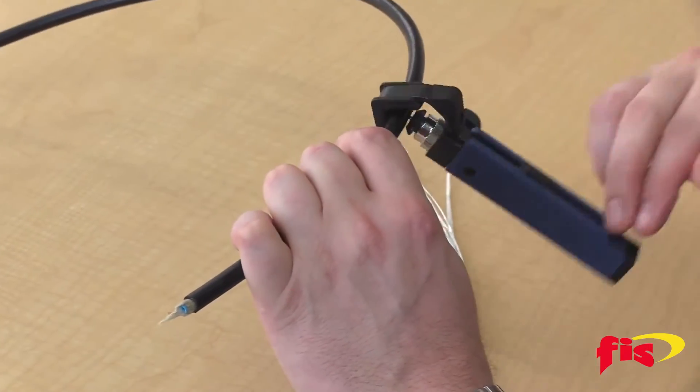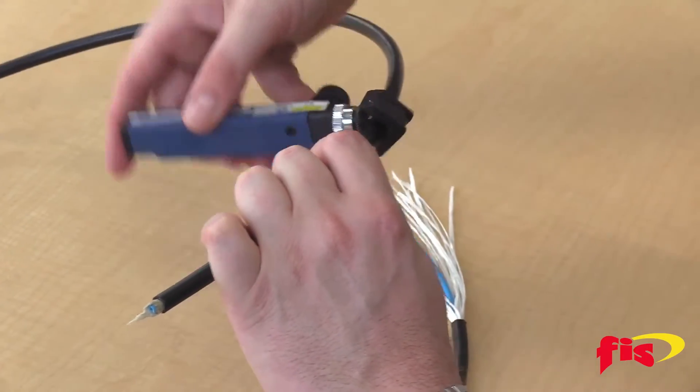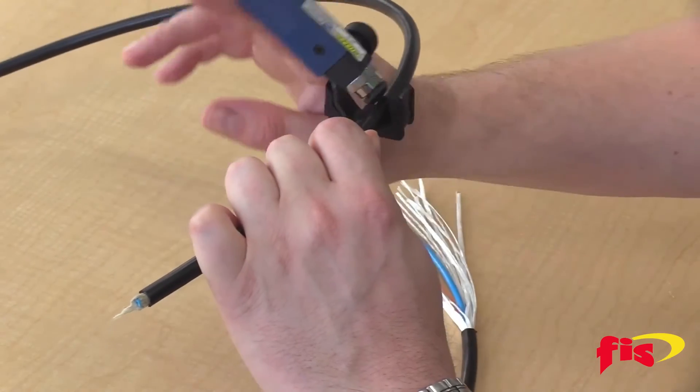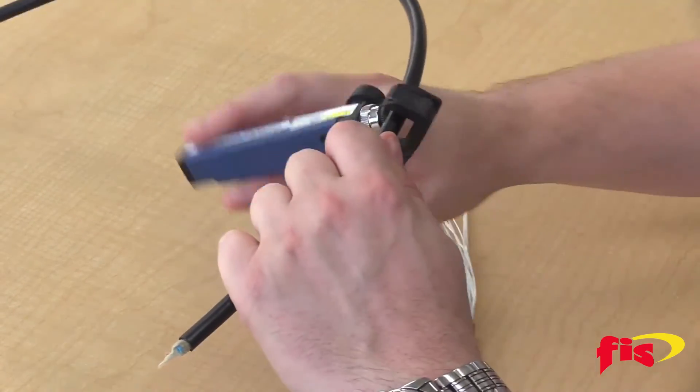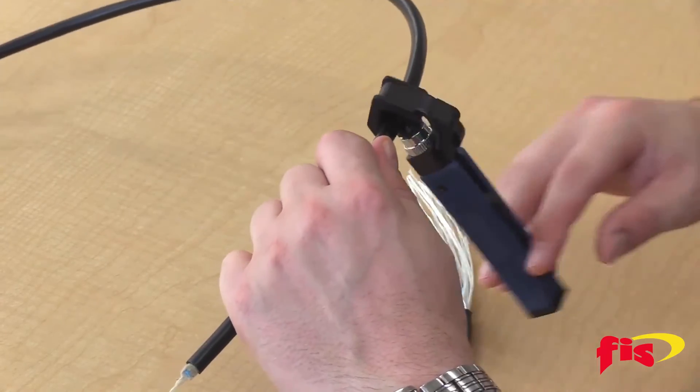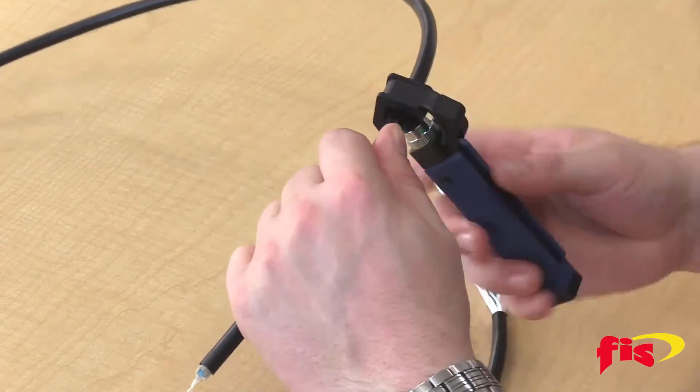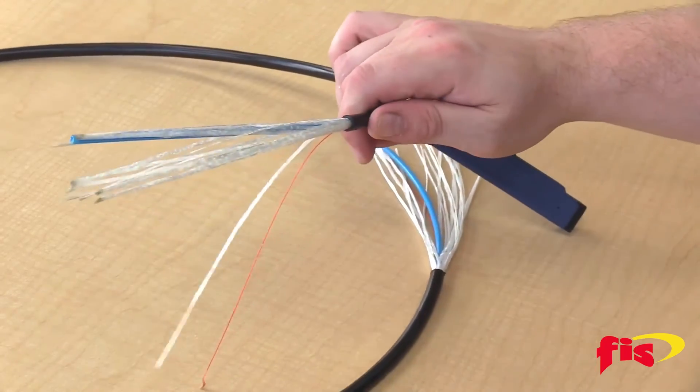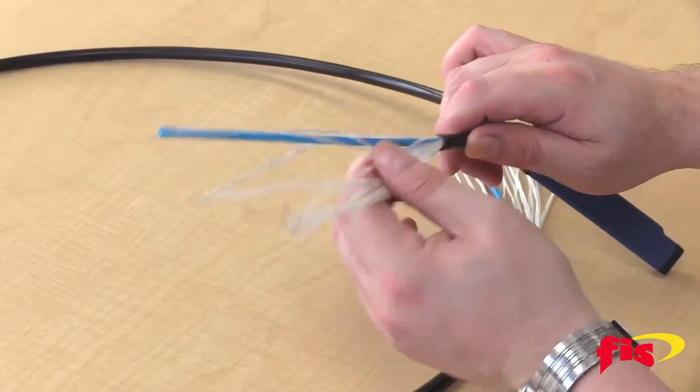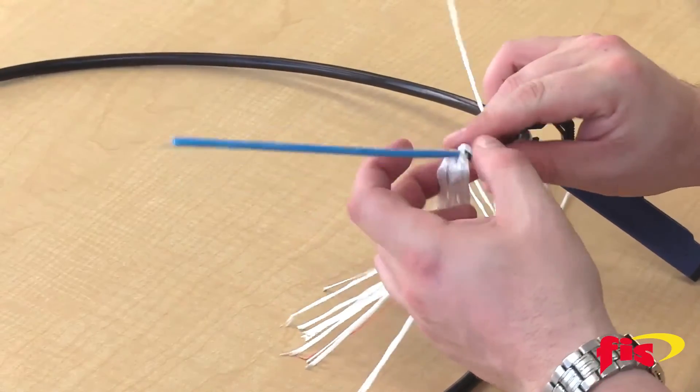Sometimes you can go back and forth if you want. Make sure it doesn't slide down the jacket. We got it. There you go. Now you have your loose tube available to access.